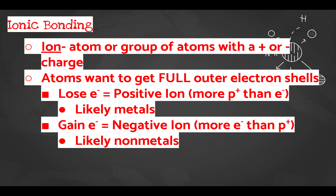Metals on the periodic table typically have one, two, or three valence electrons, so they easily form positive ions by losing electrons. Non-metals on the right side have six or seven valence electrons, so it's easier to gain one or two electrons to reach a full shell. When they gain electrons — negative particles — they become negatively charged, forming negative ions with more electrons than protons.